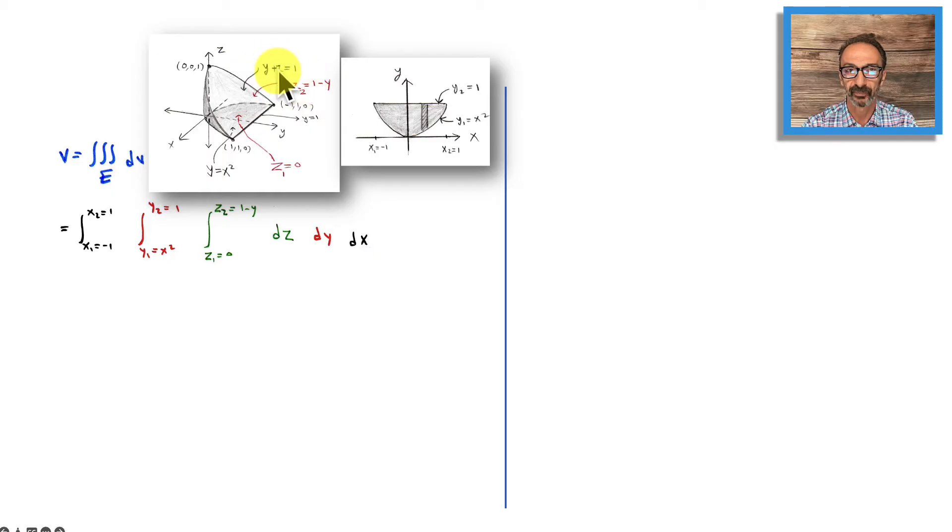For the y part, we're going to go from y1, which is x squared down below, to y2, which is 1 right here. Finally, we're going to deal with x in black that goes from negative 1 to 1, and that will make it.